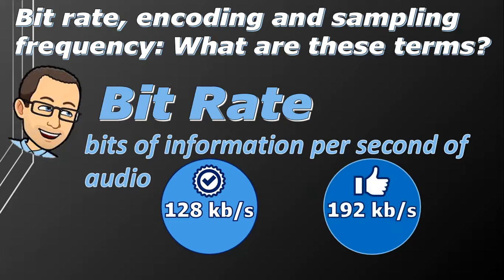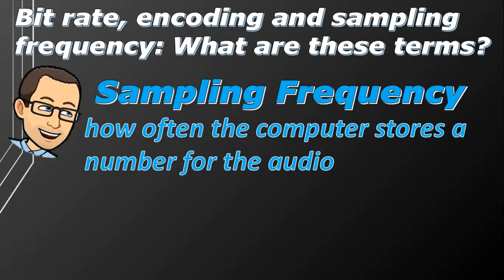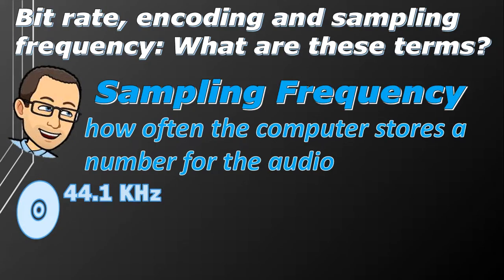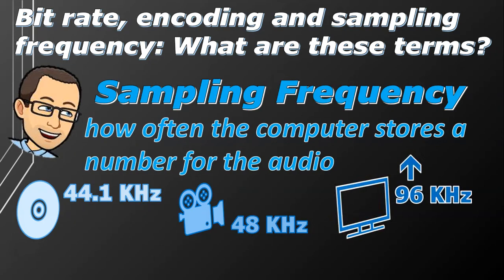I always prefer to use 192 kilobits per second just to make sure my MP3s always sound good. Sampling frequency is how often the computer stores a number for the audio, and can also affect quality, though it has more to do with the different forms of audio. When digital audio was first being developed, CDs were popular, and they created the standard of 44.1 kilohertz, or 44,100 numbers per second. When digital video came along, they chose 48 kilohertz as the standard. So most music still uses 44.1 kilohertz, most video uses 48 kilohertz, but you can find super high quality files up to 96 or even 192 kilohertz.